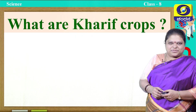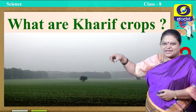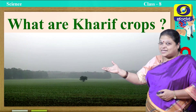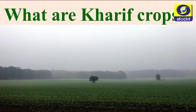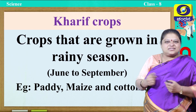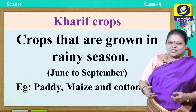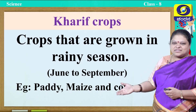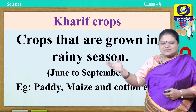First we will study about Kharif crops. Here we can see that it is slightly misty, slightly water is drizzling — so basically it is a rainy crop. Kharif crops are crops that are grown in the rainy season, usually from June to September. Example: paddy — you know that paddy requires lots of water — next maize, cotton, etcetera; they are grown in this rainy season.